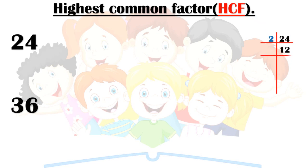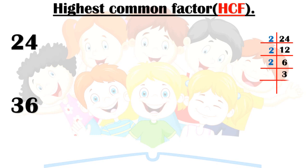Here in the factorization method, we will check: 12 times 2 is 24, then 6 times 2 is 12, then 3 times 2 is 6, and finally 3 times 1 is 3.